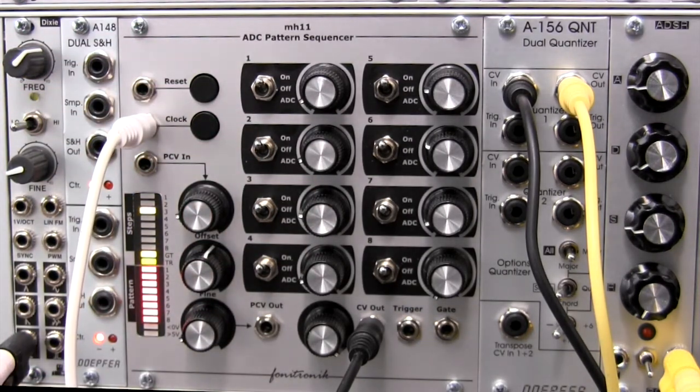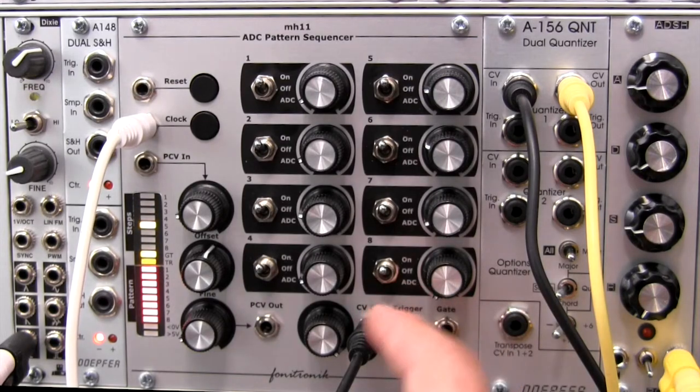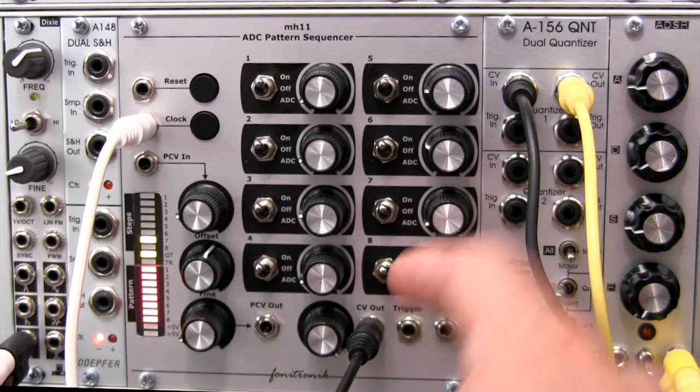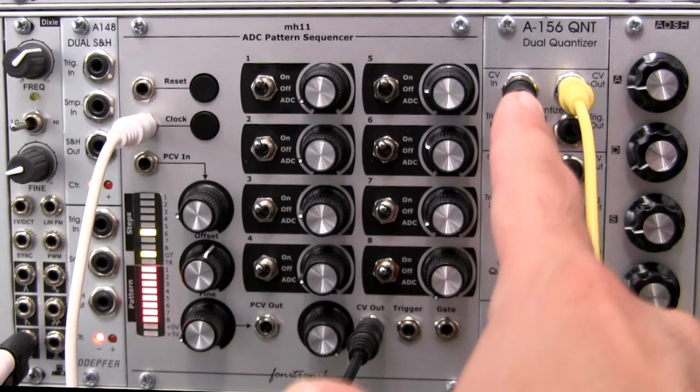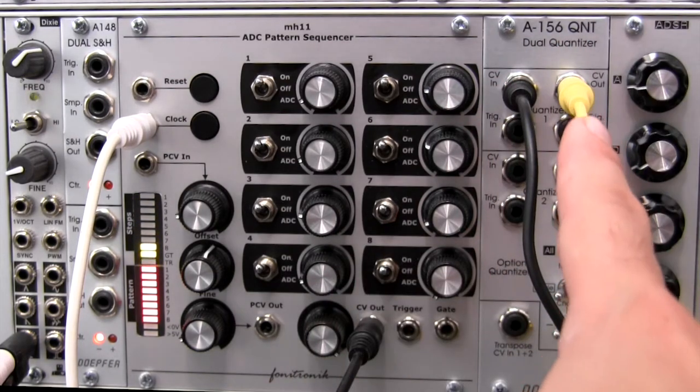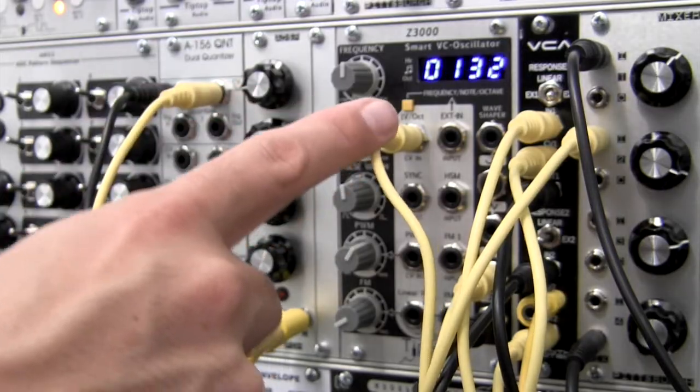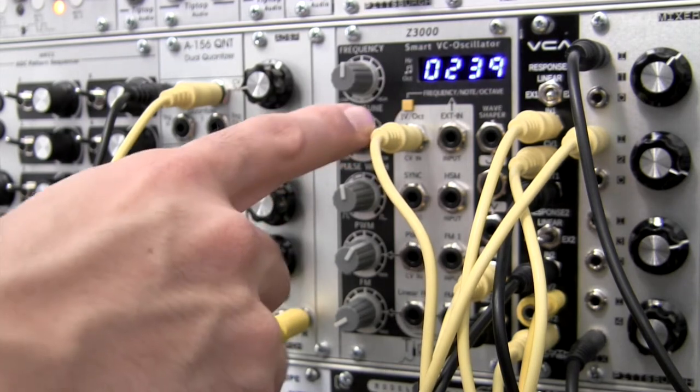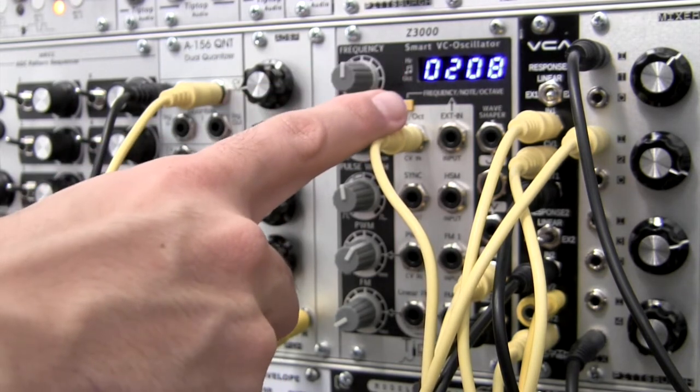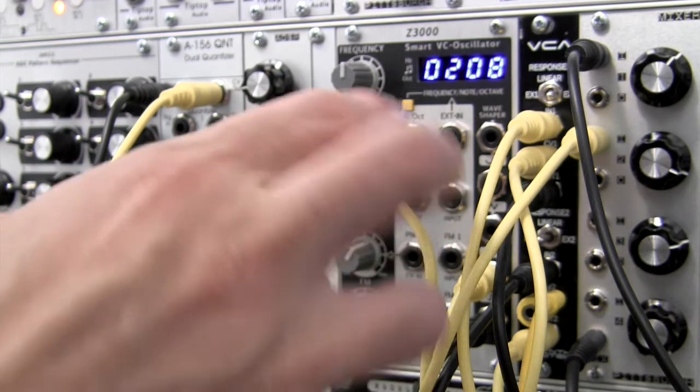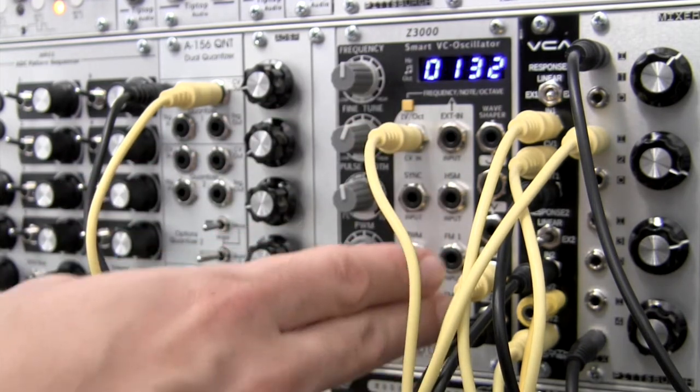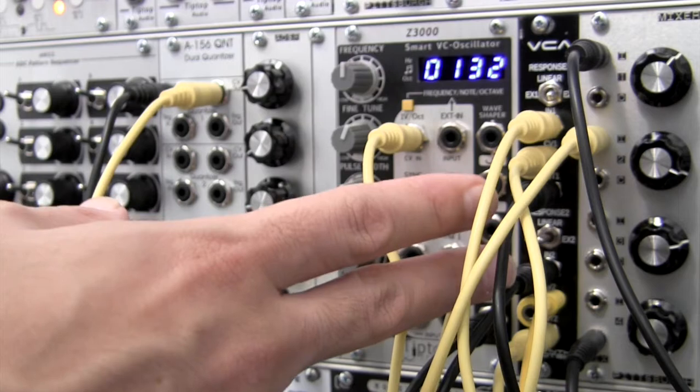And then from there, I have a CV out from here going into a quantizer so it's going to play only certain notes. CV out from there going over to the Z3000 right there, one volt per octave. And you can see the notes are changing over here.